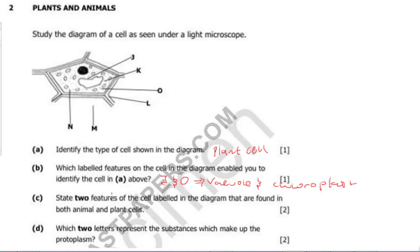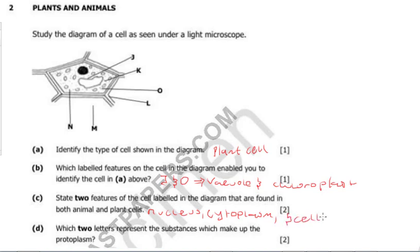Question C says: state two features of the cell labelled in the diagram that are found in both animal and plant cells. So what is found in both an animal and plant cell? We've got the cell membrane, the nucleus, and the cytoplasm. You can pick any two of these three and put them as your answer — for example, the nucleus and the cytoplasm.